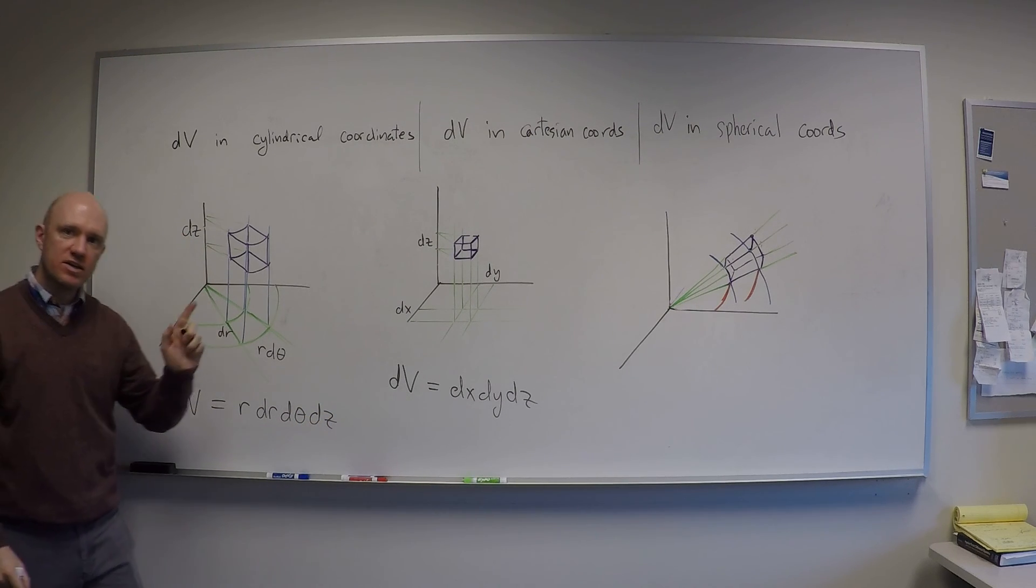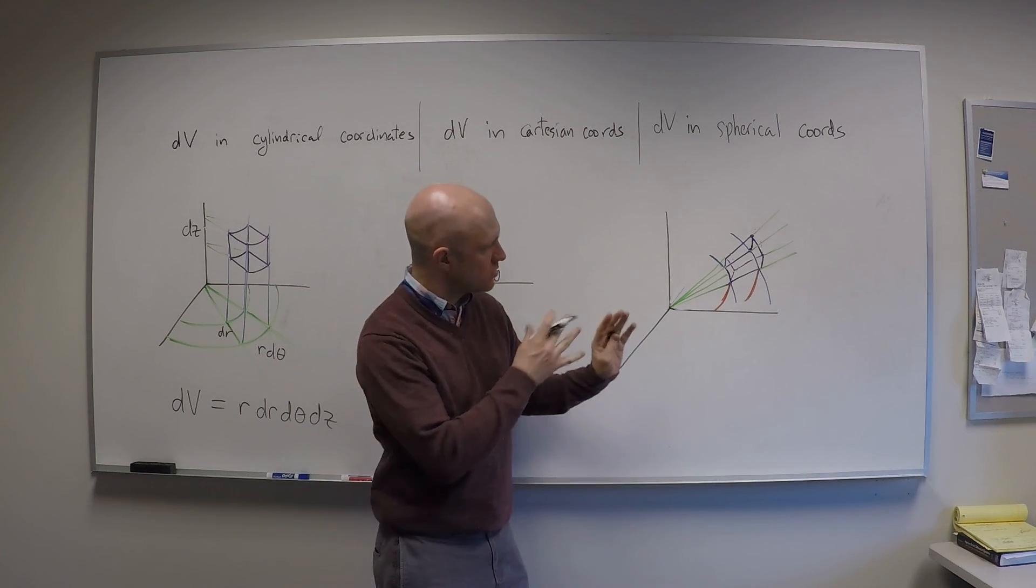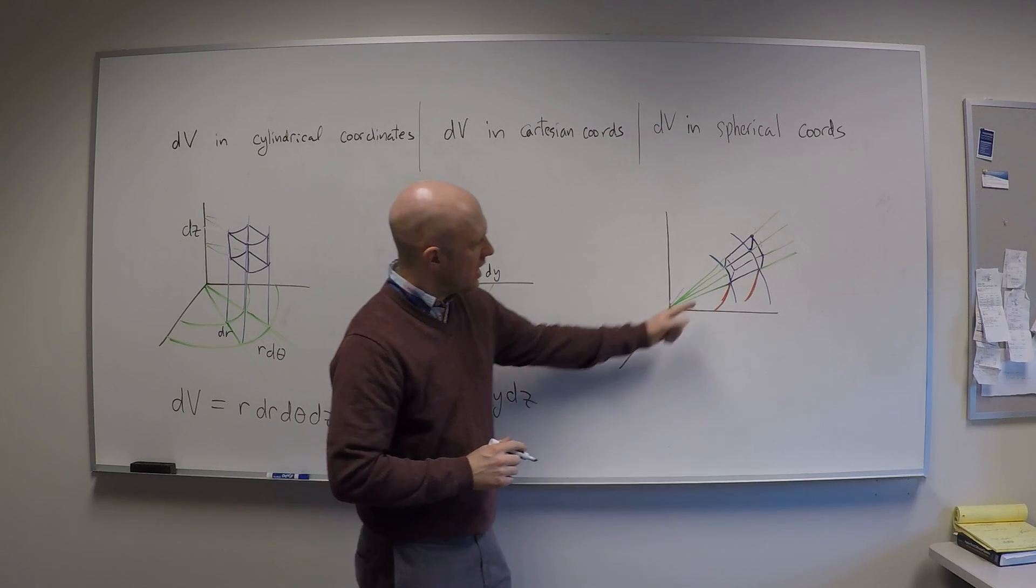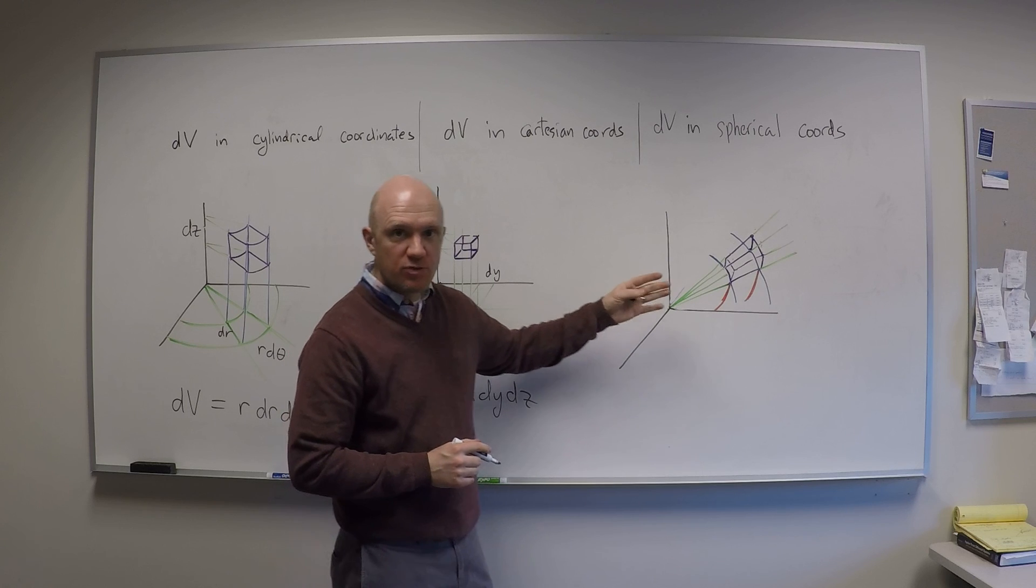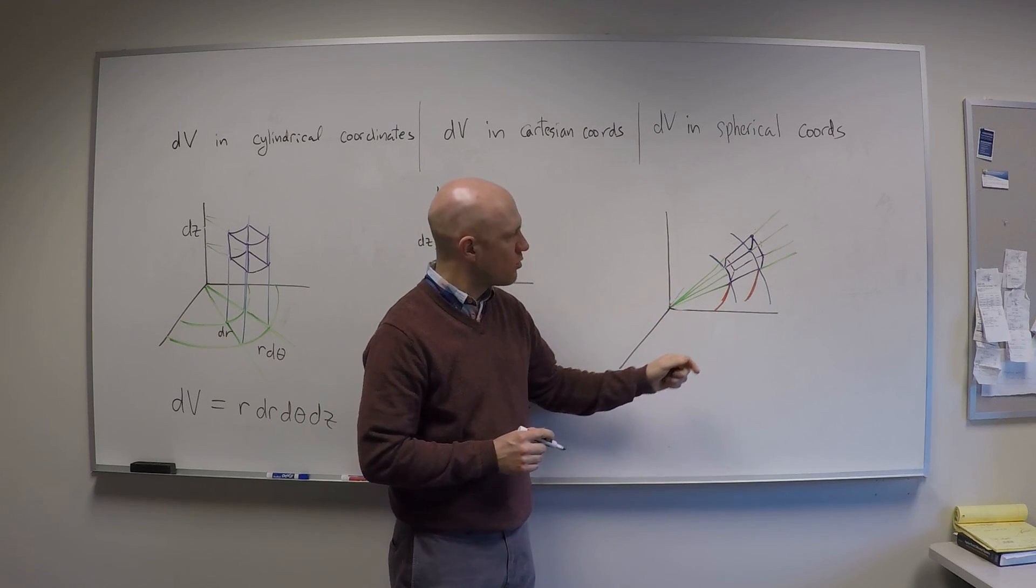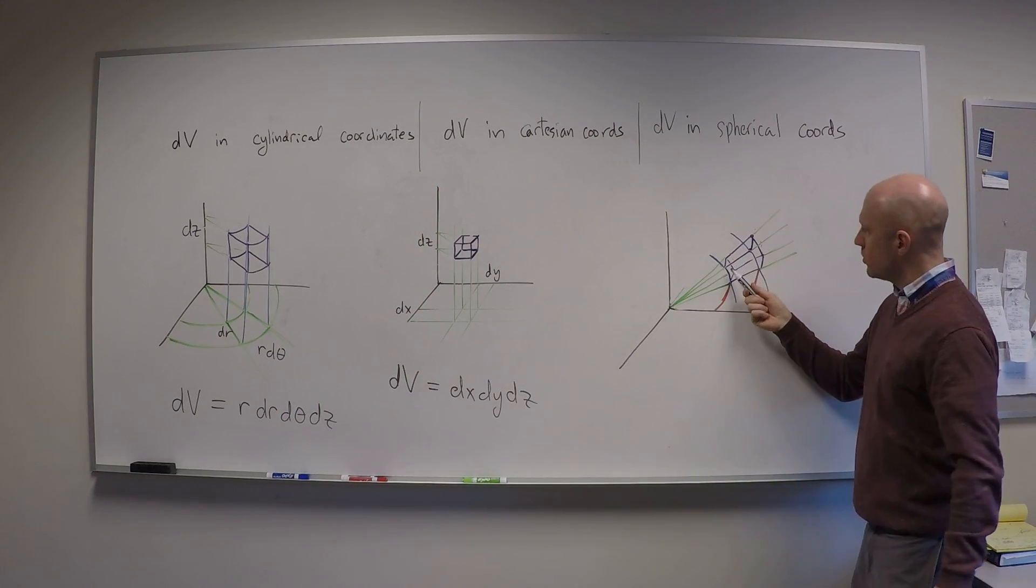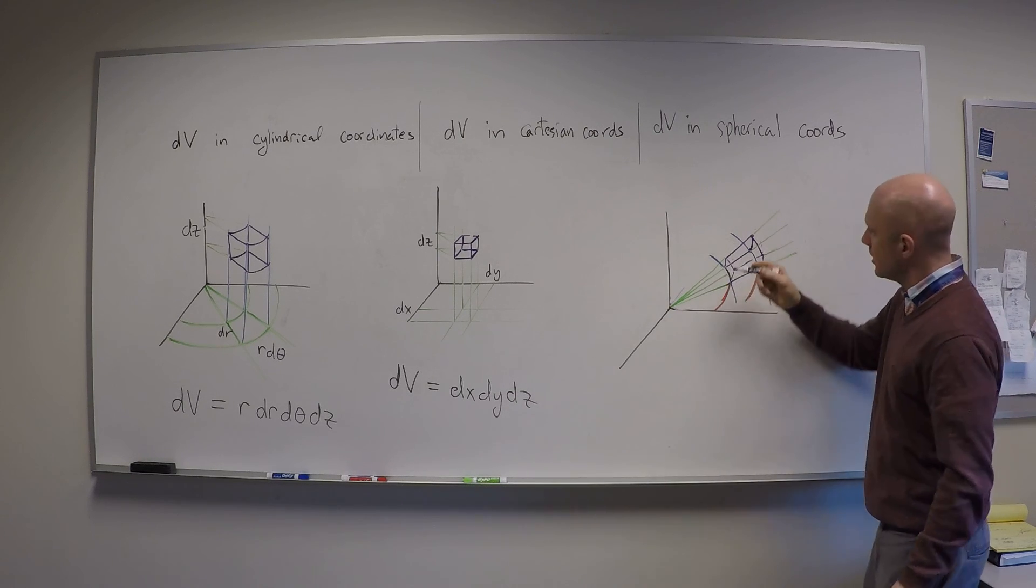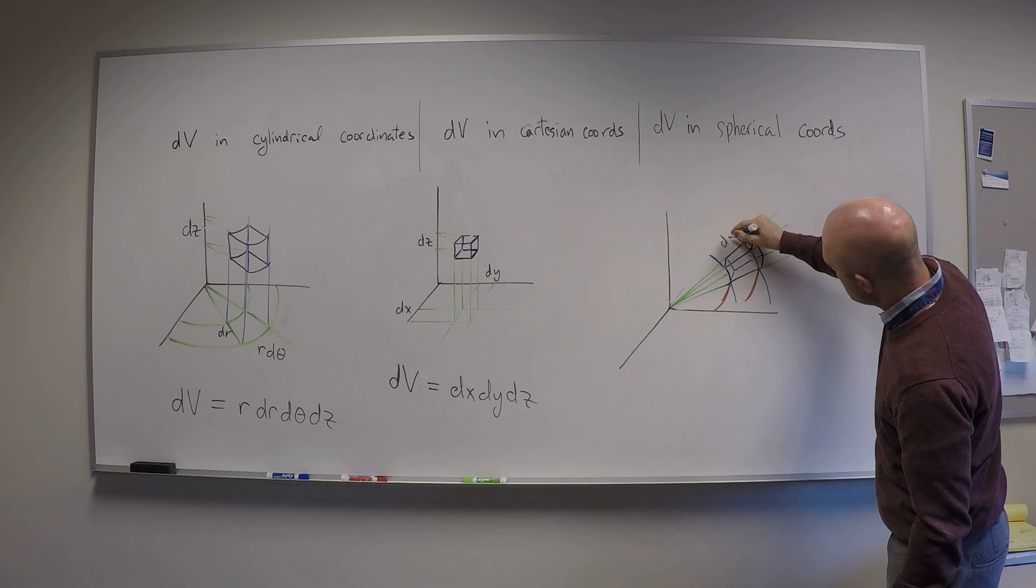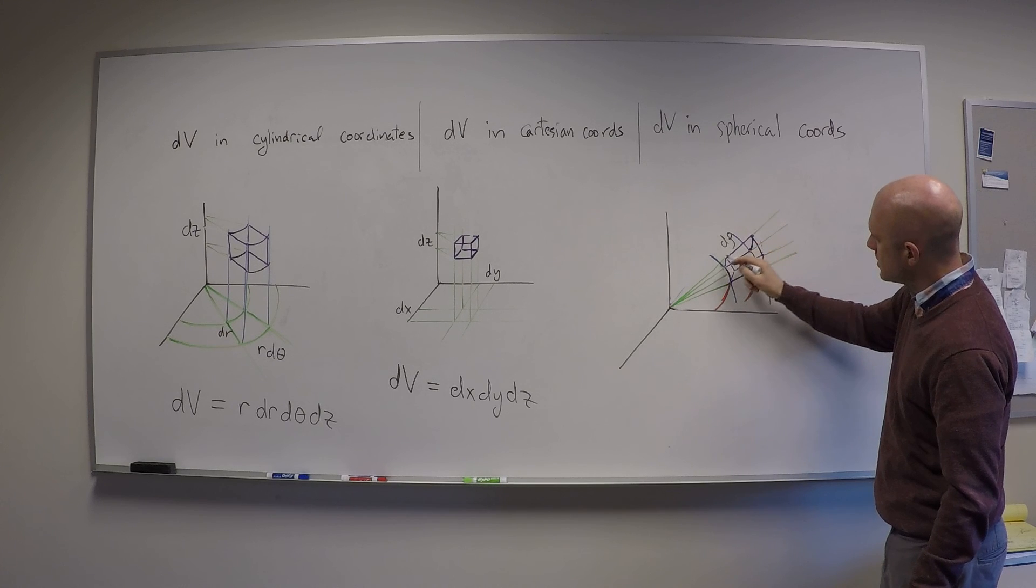The hardest one now is spherical coordinates as usual. It's sort of the trickiest to visualize. Now I'm looking at three different variations. I'm looking at a variation in rho. When I wiggle rho, d rho is this length right here. So this side of the box is d rho. That's this length.